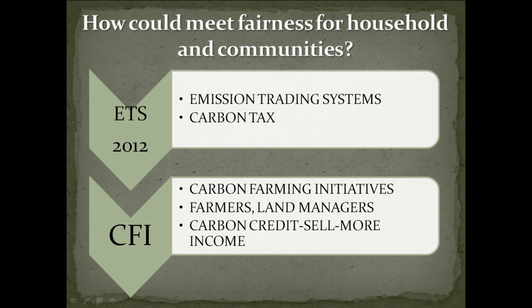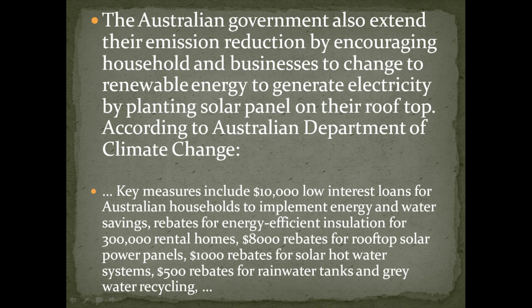In order to reduce carbon pollution, the Emission Trading System (ETS) was introduced in 2012. ETS introduced carbon taxing to farmers and land managers. Farmers and land managers are encouraged to grow more trees in their farms in order to absorb more carbon from the atmosphere. In return, the government will reduce their tax, which will increase the income of farmers. The Australian government also extended their emission reduction by encouraging households and businesses to change to renewable energy, generating electricity by planting solar panels on their rooftops.